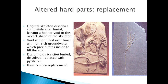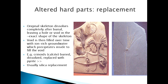Here's another way we can have hard parts: wholesale replacement. You have the original skeleton — the whole thing dissolves, but it leaves a perfect hole in the shape of that skeleton in the sediment, which then gets filled by another mineral. You have a solid chunk of mineral that replicates that organism. These crinoids make their skeletons out of calcite, but then they can be completely replaced by quartz, silica, pyrite — fool's gold — all kinds of things. So that's another common way to preserve fossils.